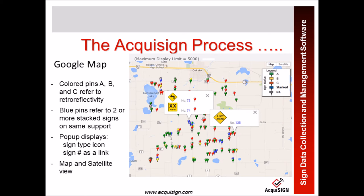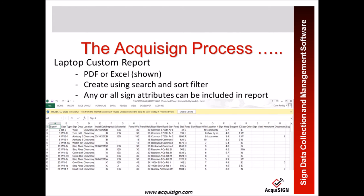There's an example of a map shown on the laptop where all the pins are red, green, and yellow, representing retro reflectivity — green being good and red being poor. You'll also notice blue pop-ups, which indicate more than two panels on a support. The numbers in those pop-up boxes are links. This is an example of a report done in Excel with some attributes. You can do custom reporting with any or all attributes, as well as a history report.